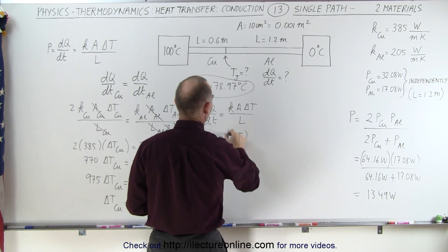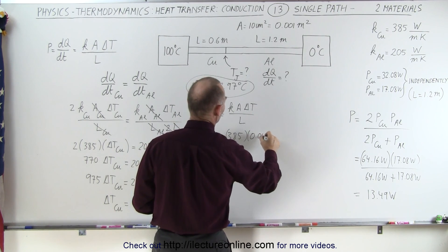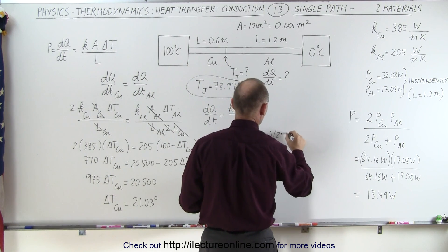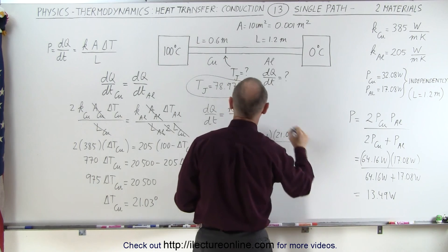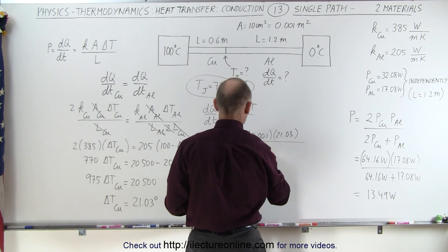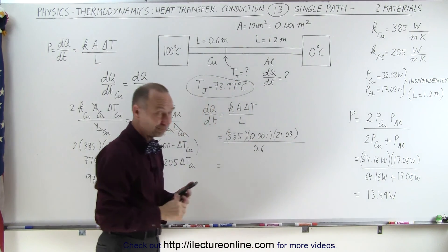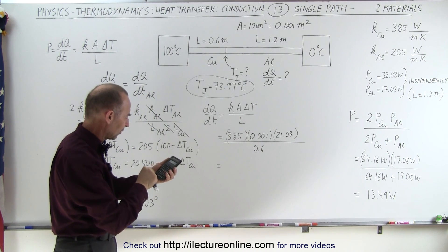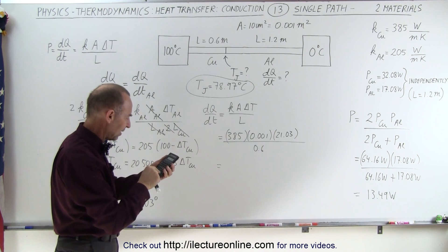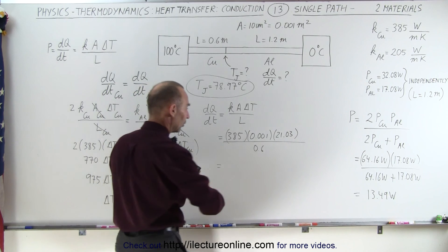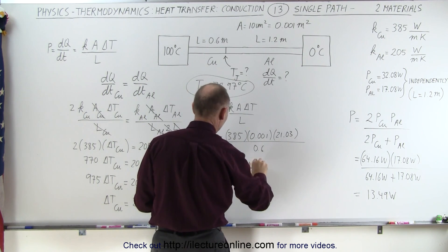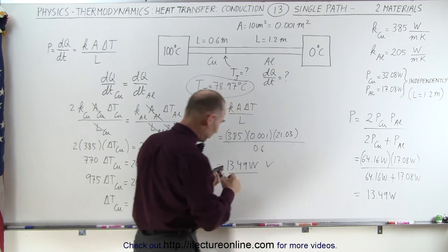So that's 385 times 0.001 times the difference, which is 21.03, all divided by the length, which is 0.6. And let's see if we get the same result. Keep your fingers crossed and see what happens: times 0.001 times 385 and divide by 0.6 equals, and we get 13.49 watts, which is of course exactly the same as what we got before.